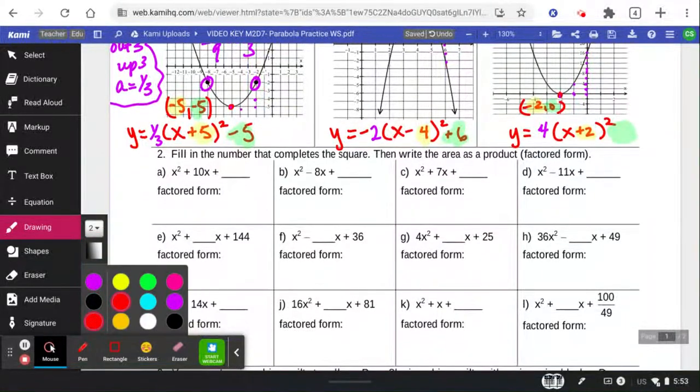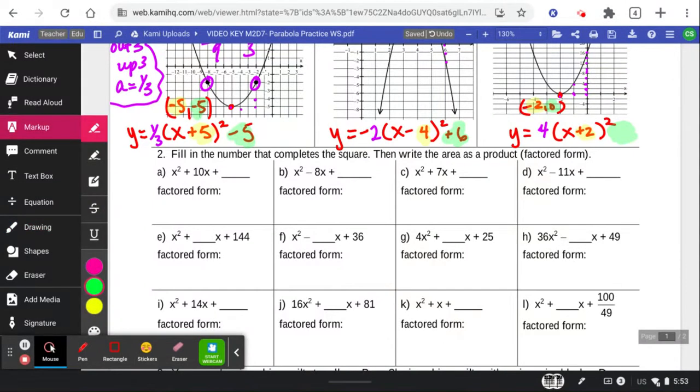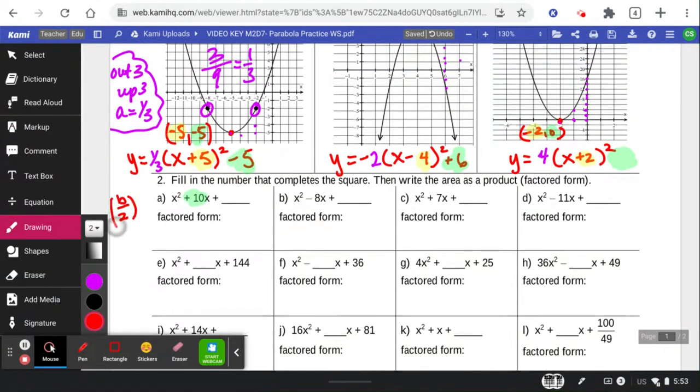Alright. Let's go through these down here. We just learned how to complete the square by taking this B value, dividing it in 2, and squaring it. So just off to the side, we're taking that middle term, dividing it by 2, and squaring it.